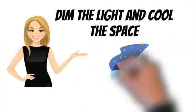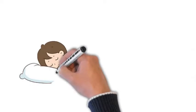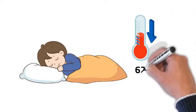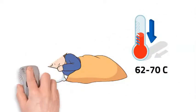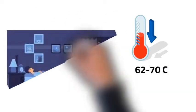Dim the lights and cool the space. Our bodies snooze more profoundly in colder temperature ranges of 62 to 70 degrees, according to research. The similar effect may be achieved in dark rooms.